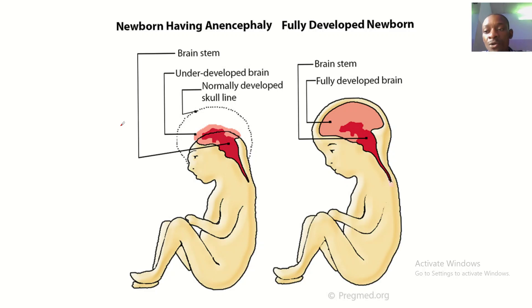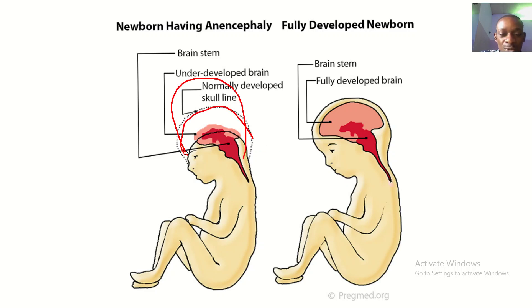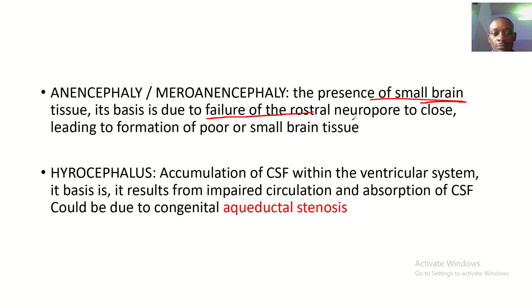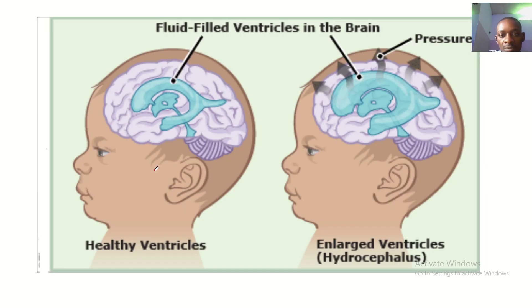Anencephaly or meroanencephaly — you can see that this is where the normal skull is supposed to be, but you can see where the brain tissue is developing. Anencephaly is the presence of small brain tissue, and it is due to the failure of the rostral neural pore to close. This leads to formation of poor or small brain tissue.